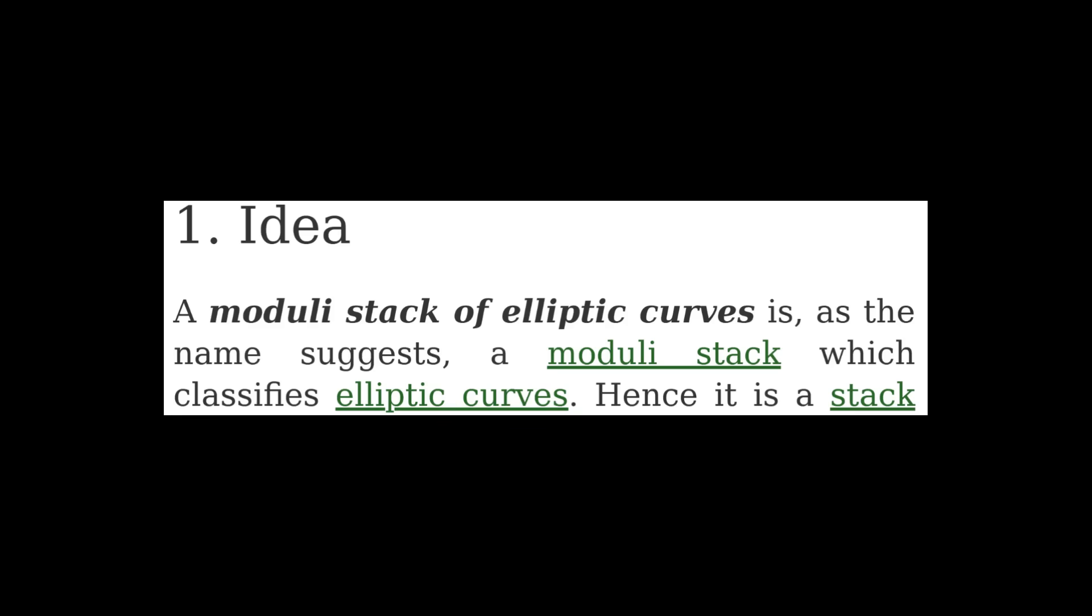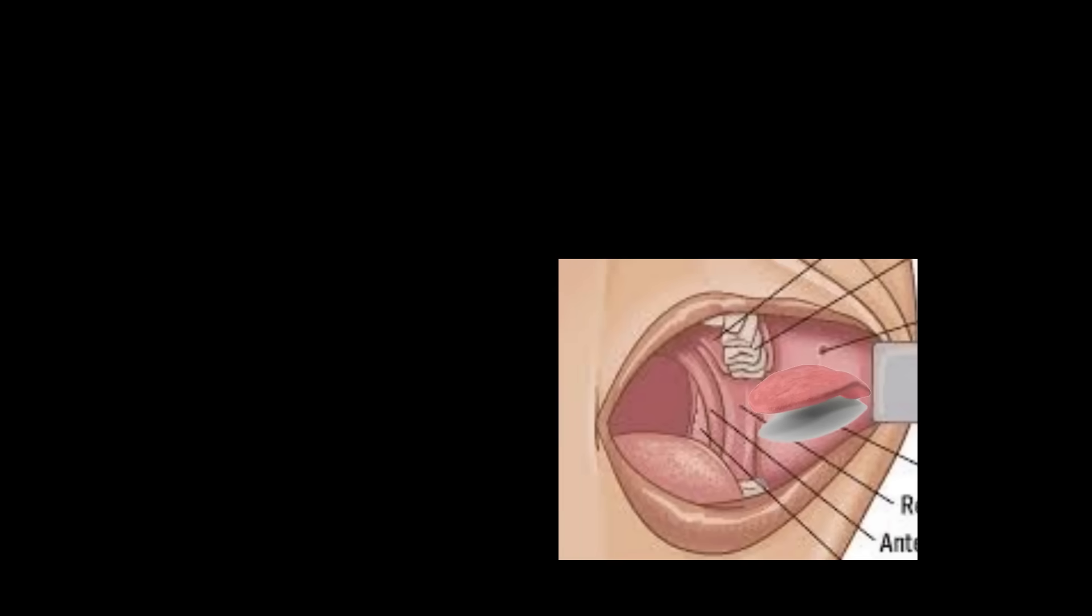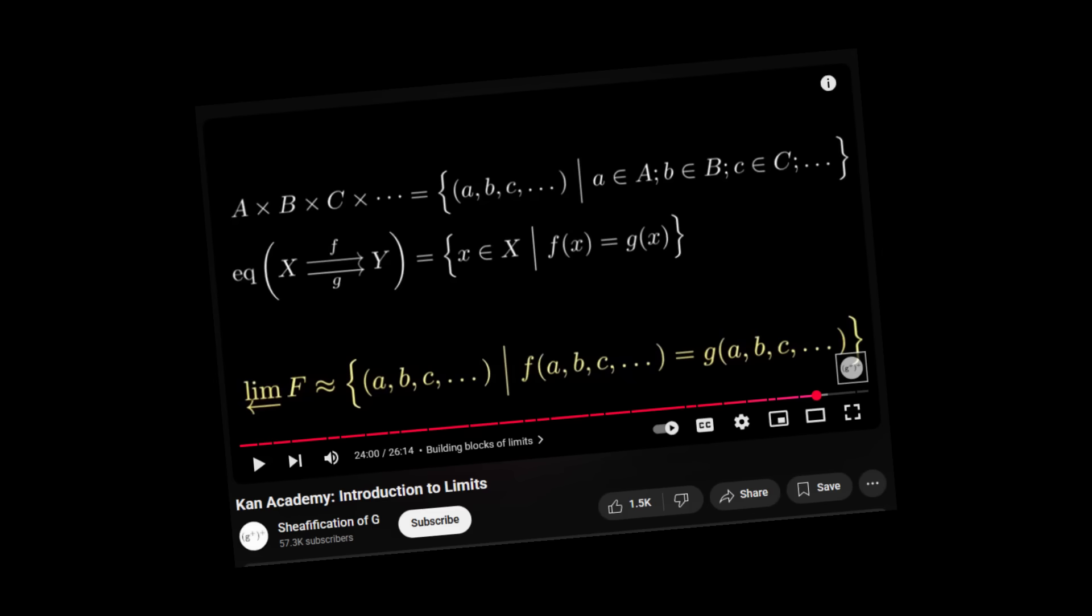I guess I should explain what the Yoneda Lemma is. There's a handful of ways to state the Yoneda Lemma, but my favorite is that every category is a category of sets. With clear and concise explanations like this, I think I qualify to write the idea sections of nLab wikis. Although my tongue is very firmly pressed against my cheek, I've used this idea before when I talked about limits.